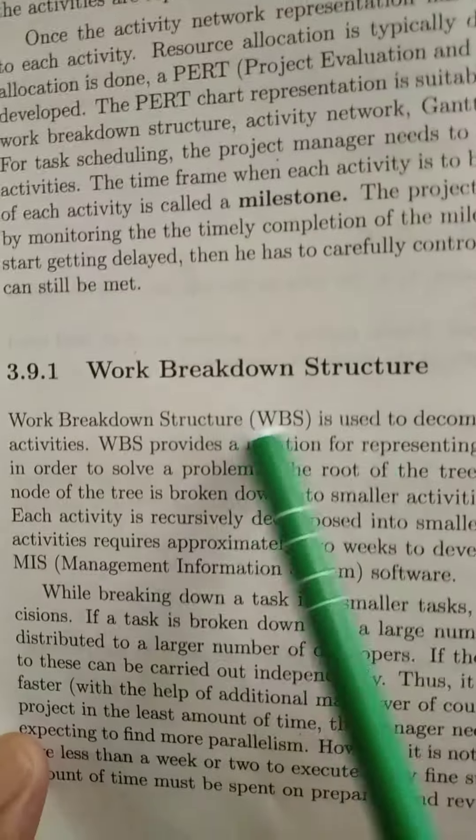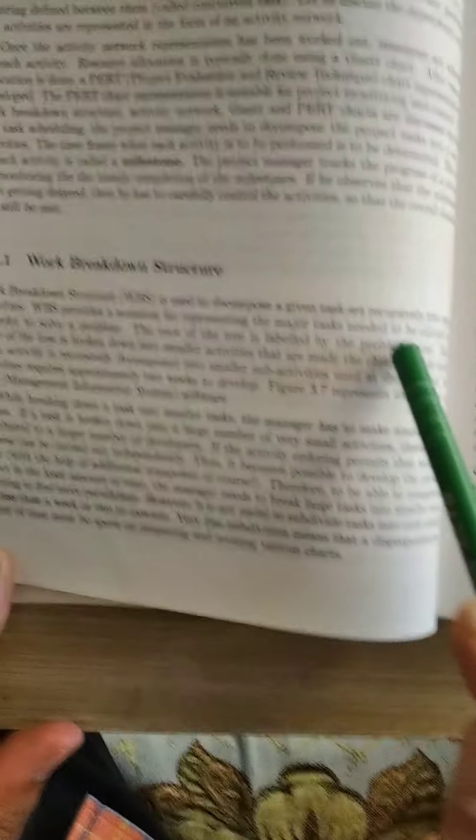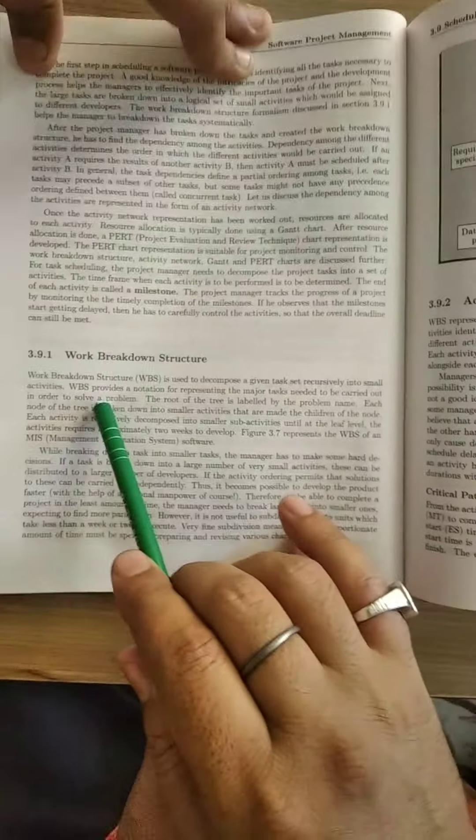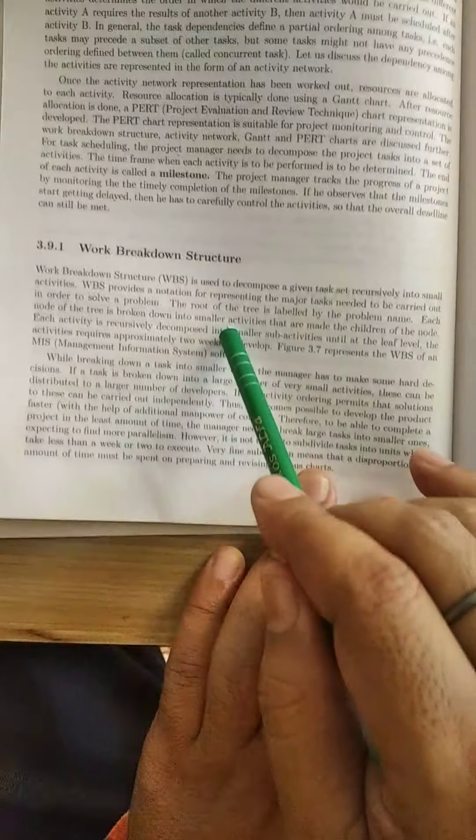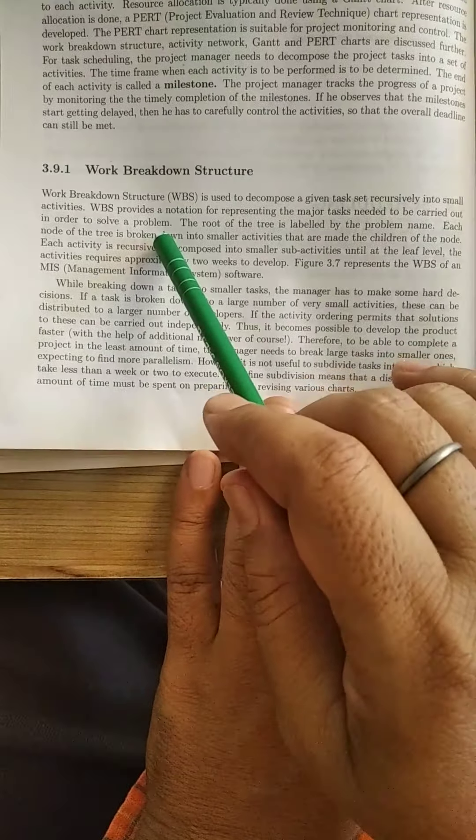First one is work breakdown structure. Work breakdown structure is used to decompose a given task set recursively into small activities. It provides notation for representing the major tasks needed to be carried out in order to solve a problem.